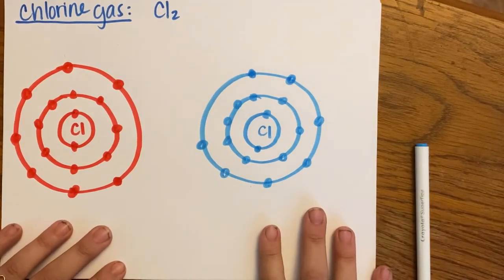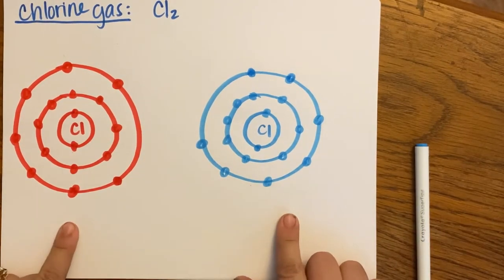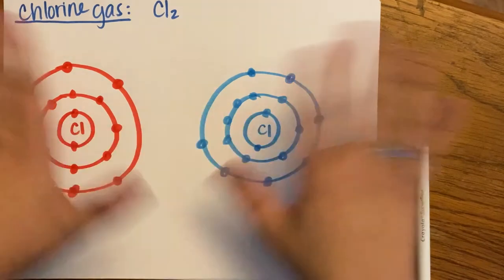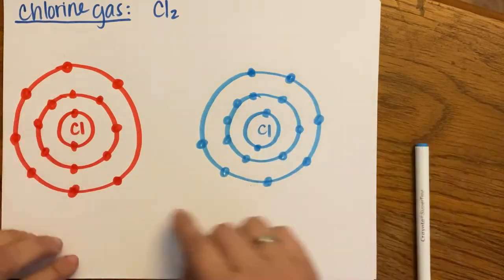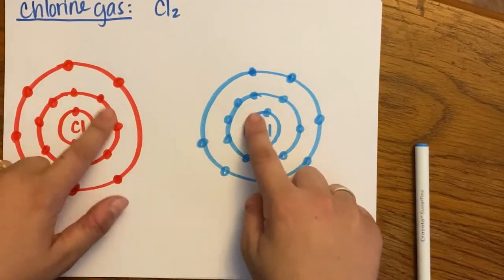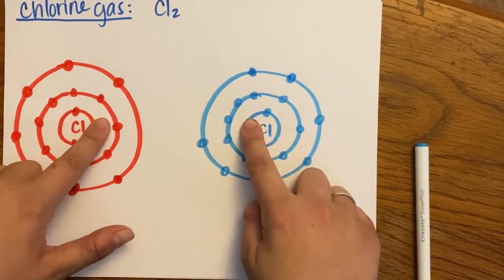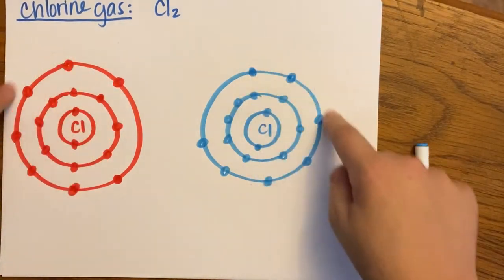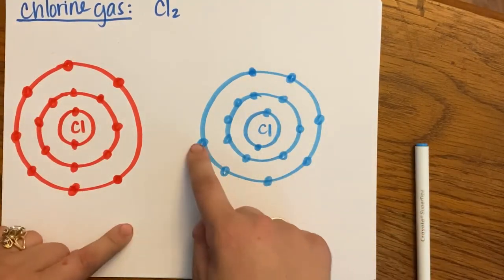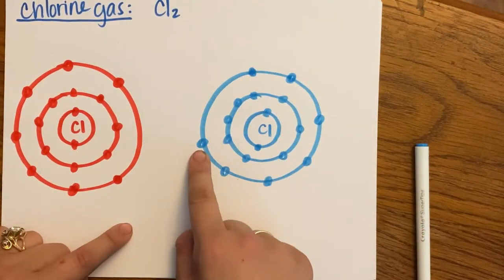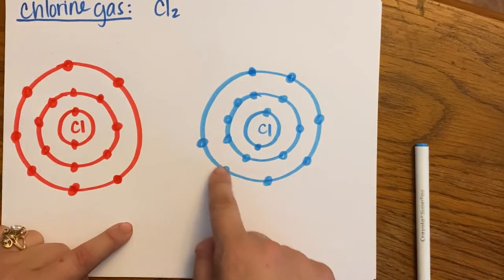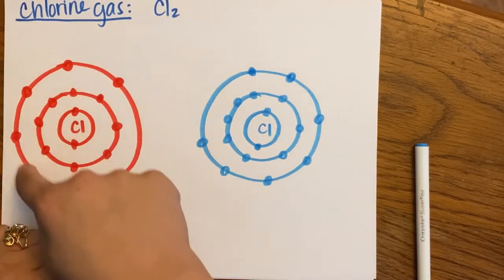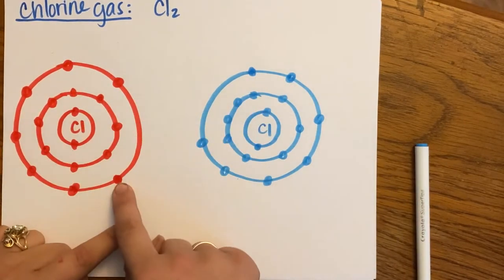Here are my two chlorine atoms. These are neutral in that they haven't bonded yet. They have a full inner shell, full first shell, full second shell. But then their third shell — they each have seven valence electrons: one, two, three, four, five, six, seven. One, two, three, four, five, six, seven.